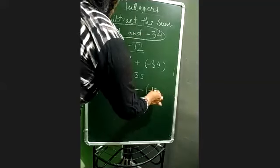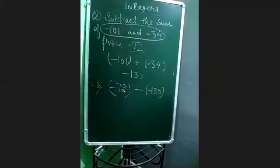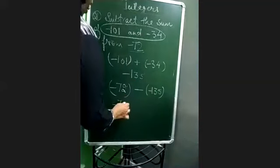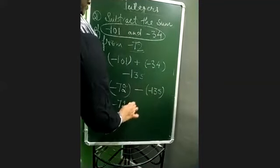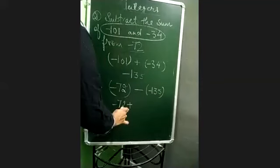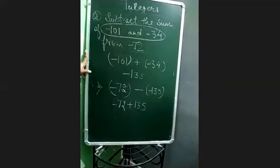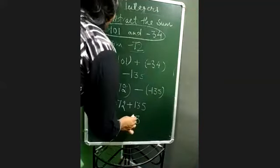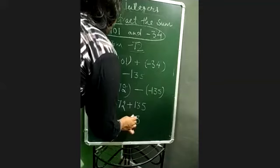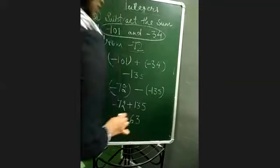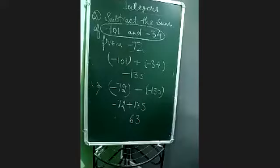Coming to the next number - it is talking about the sum. What did we get from the sum? Minus 135. So we will take minus 135. Now let us solve it further. Minus 72 only, and minus and minus gives you plus. It will give you 135. Now when you solve it: 5 minus 2 gives you 3, and 13 minus 7 gives you...